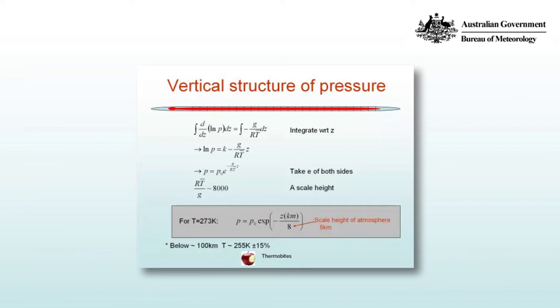If you then take the natural exponent of both sides, e to the log p just gives us p, and we have e to the power of k minus gz over RT bar. Using fundamental exponential identities we can write that as e to the k multiplied by e to the minus gz over RT bar. And e to the k we'll call p0, some reference pressure. So p0 will be the pressure when z equals 0 because e to the 0 is 1.